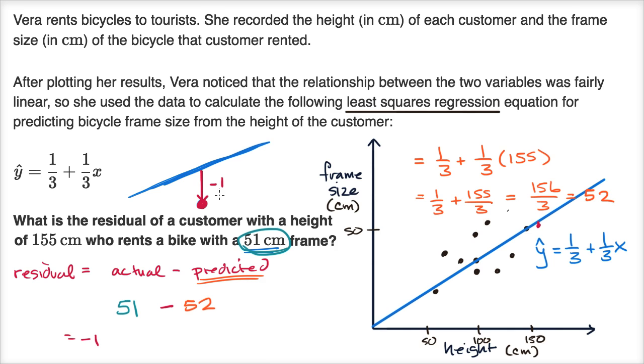And in this case, it is negative one. And so that is our residual. This is what actual, the actual data, minus what was predicted by our regression line.